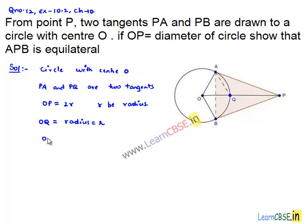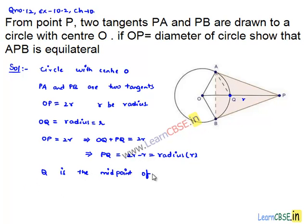Now, as it is given OP is equal to 2R, which implies OP can be written as sum of OQ plus PQ which is equal to 2R. That implies PQ is equal to 2R minus R, that is R. Therefore, PQ length is equal to R, that is radius. As OQ is equal to PQ, we can say that Q is a midpoint of OP.